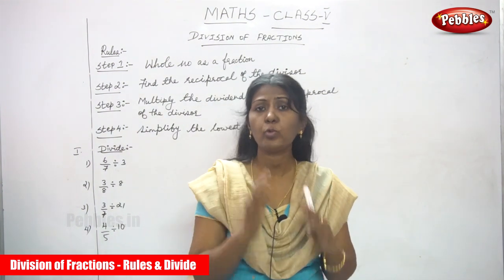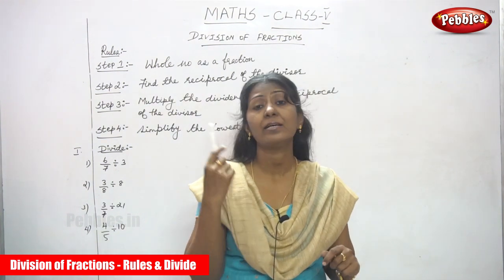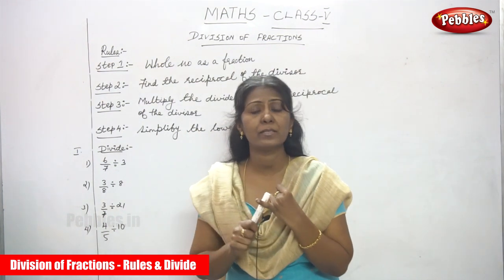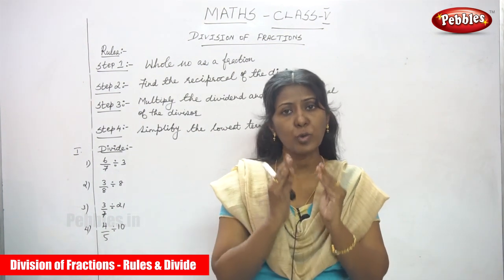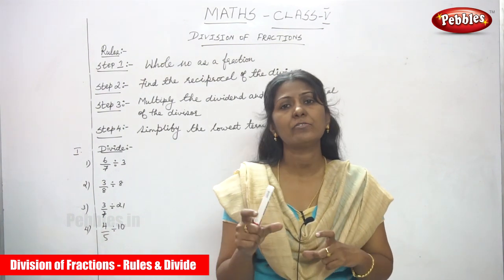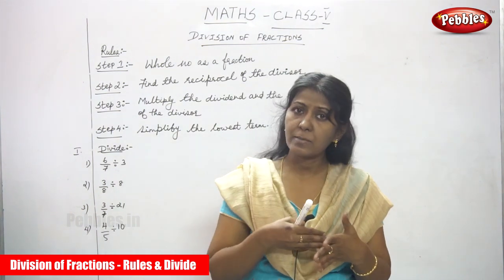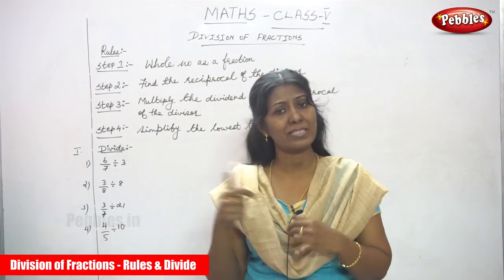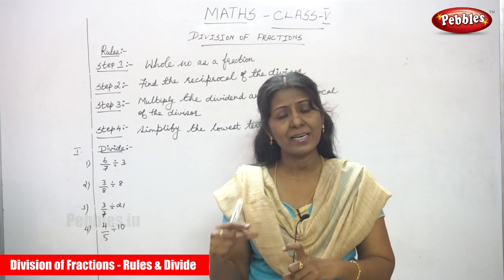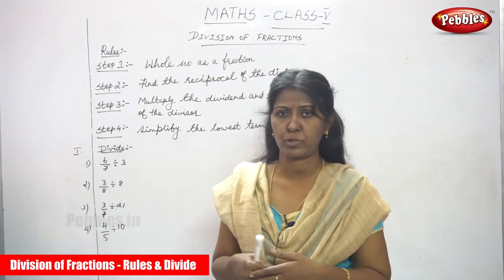Let me repeat the four steps. Don't forget the rules, otherwise you will make mistakes in division of fractions. Step 1: convert the whole number as a fraction. Step 2: find the reciprocal of the divisor. Step 3: multiply the dividend and the reciprocal of the divisor. Step 4: make the final answer as a lowest term.